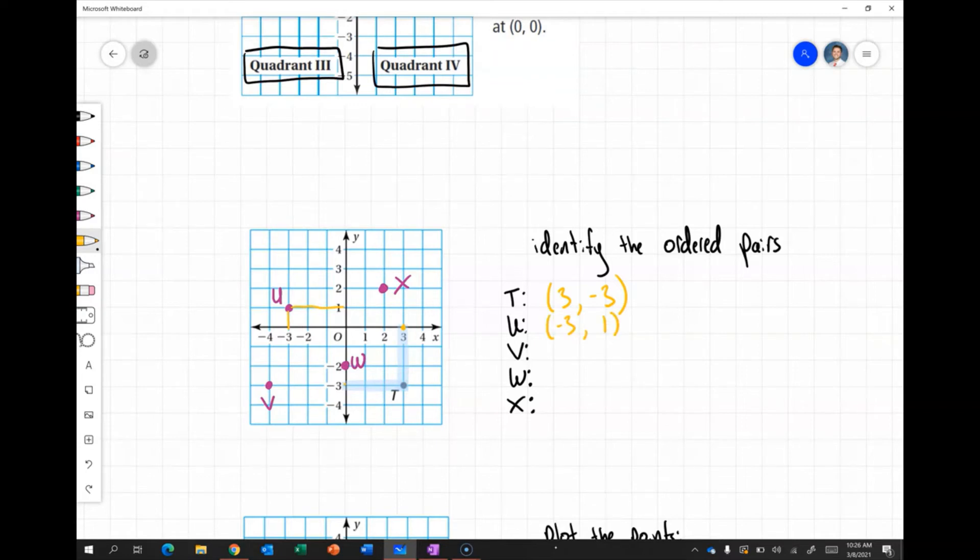Then for V, I see V is at negative 4 on the x-axis and negative 3 on the y-axis.